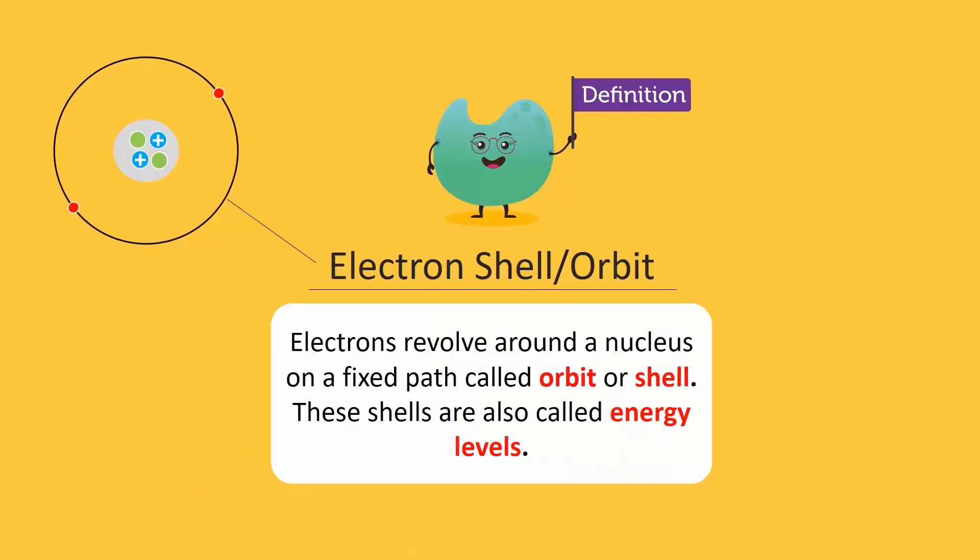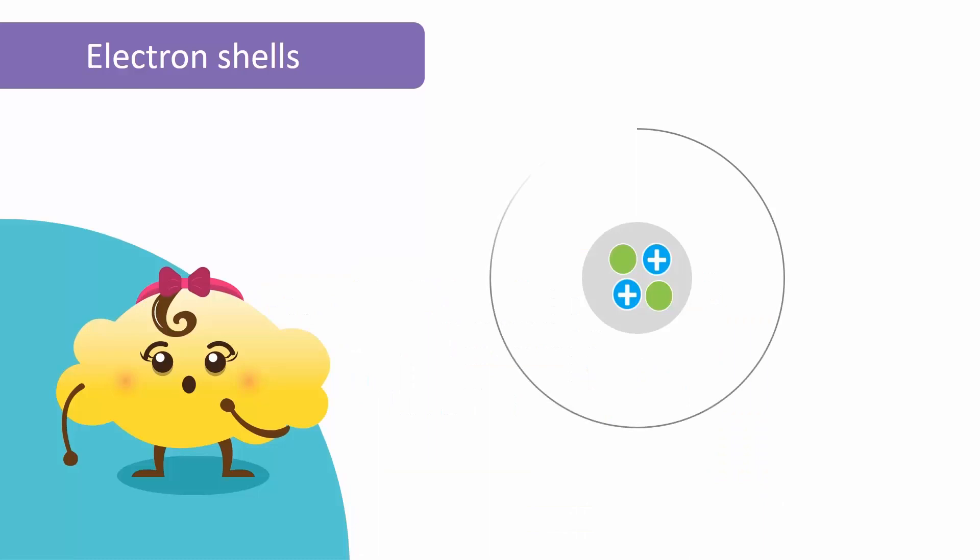Electrons revolve around a nucleus on a fixed path called orbit or shell. These shells are also called energy levels. The shell is represented by a circle around the nucleus and electrons are represented by red dots.